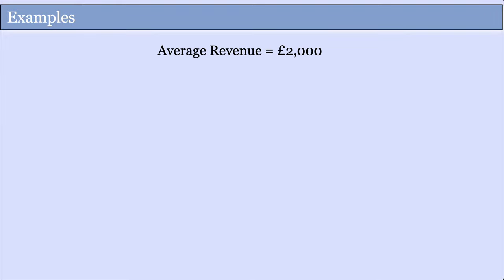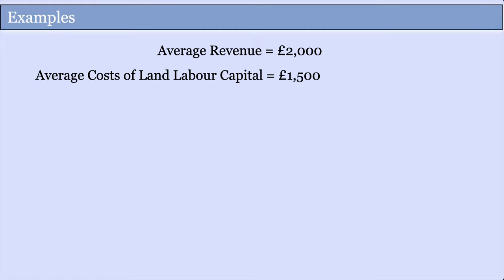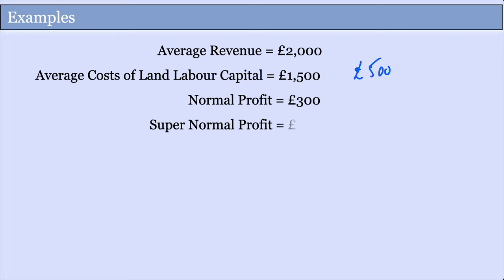Here's another example. If the average revenue is £2,000 and the average cost of land, labour, and capital is £1,500, the accountant says you're making £500 profit. But if you could earn £300 elsewhere, that's your normal profit — so you're only making supernormal profit of £200. That's the accountant's view of profit, not the economics point of view.